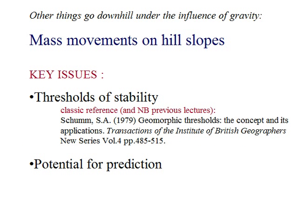Similar relationships can be identified in other phenomena that involve downhill motion, such as mass movements on hill slopes. Key issues to think about in your reading around this topic include the importance of thresholds and stability, which we discussed in a previous lecture, and the importance of being able to predict geomorphic events, especially hazardous events like landslides, avalanches and other mass movements.